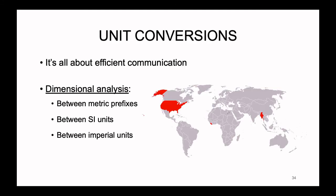So why do we need to convert units? It's all about efficient communication. As we talked about in the previous lecture, we need to include a unit with our number because units help give us context for what the number actually means. Something like 12 atoms has very different meaning than 12 bottles of Coke — two totally different things. Sometimes we need to convert between units in order to communicate more efficiently.